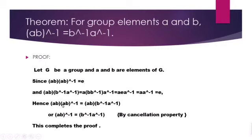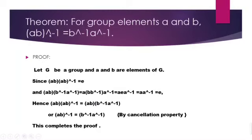By the left cancellation property, which we discussed in the last video, since Z is a group you can cancel AB from both sides. This gives AB whole inverse equals B inverse A inverse. This is what we wanted to prove: for group elements A and B, AB whole inverse is the same as B inverse composed with A inverse. This completes the proof, and this is called the Socks-Shoes property — a very important property of groups. Thank you.